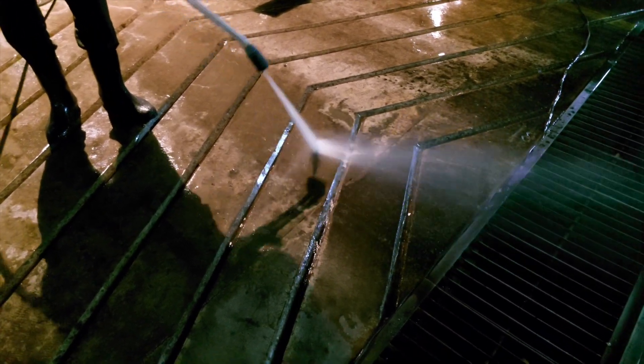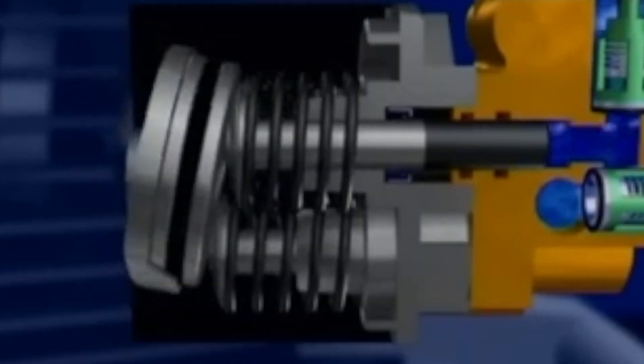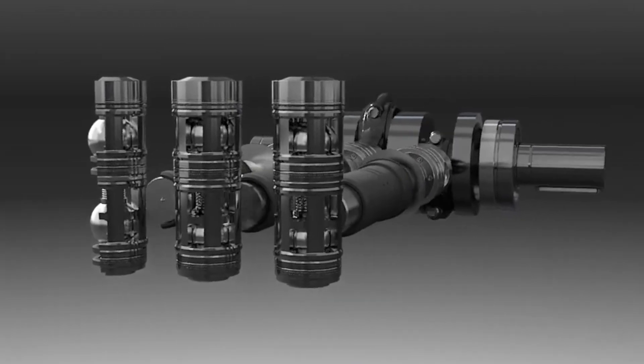Now, when we're looking at pressure washer pumps, there's really only three types that you're going to run into. First is the wobble, second is the axial cam, and third is the triplex plunger pump.